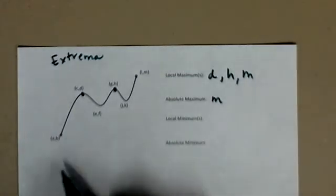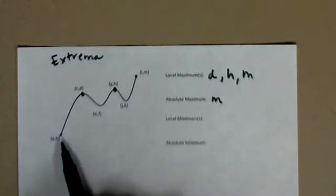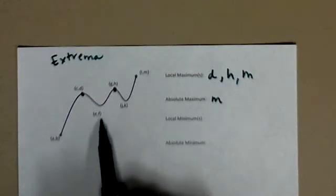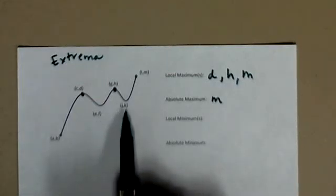Okay, local minimums. So I've got right here's a low point, that point's a, b, this point here is e, f, and this point here is j, k.